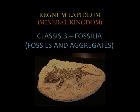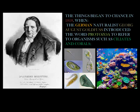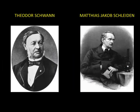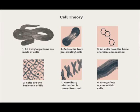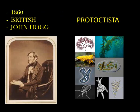Things began to change in 1818, when the German naturalist Georg August Goldfuss introduced the word Protozoa to refer to organisms such as ciliates and corals. In 1838-39, the Germans Theodor Schwann and Matthias Jakob Schleiden established the cell theory. And with it, in 1848, another German, Carl Theodor Ernst von Siebold, included in Protozoa just the animal-like unicellular organisms such as foraminifera and amoeba.